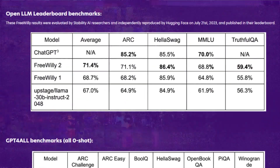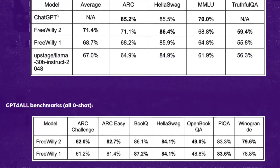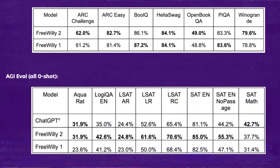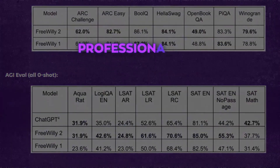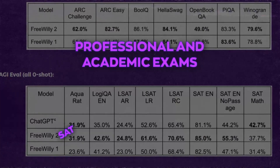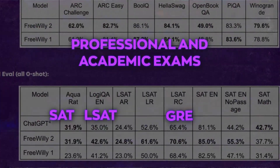Stability AI evaluated Free Willy models using various benchmarks that measure their natural language understanding and reasoning abilities. These benchmarks include the OpenLLM Leaderboard, GPT-4-All, AGI-Eval, and Professional and Academic Exams such as SAT, LSAT, GRE, and GMAT.